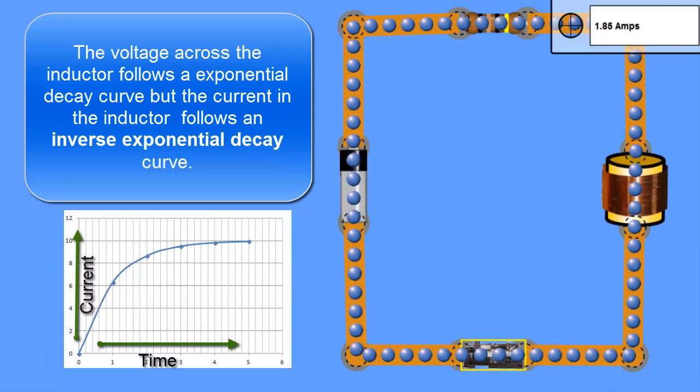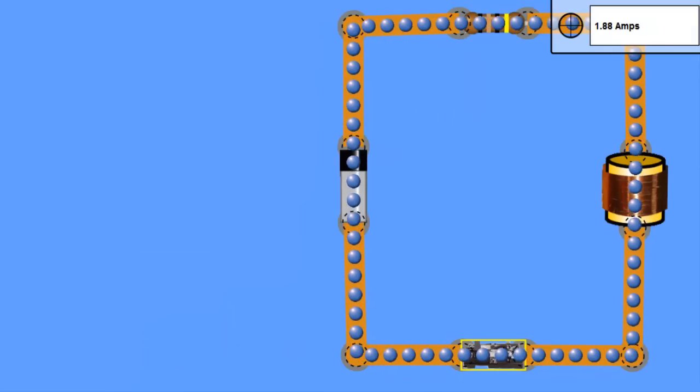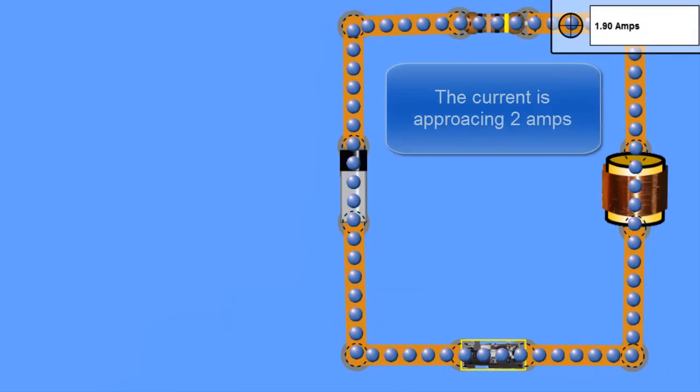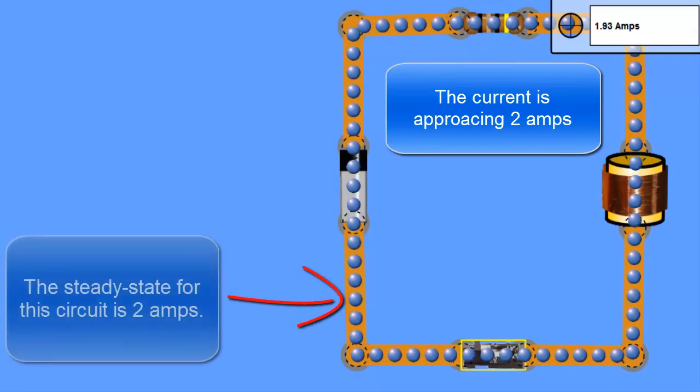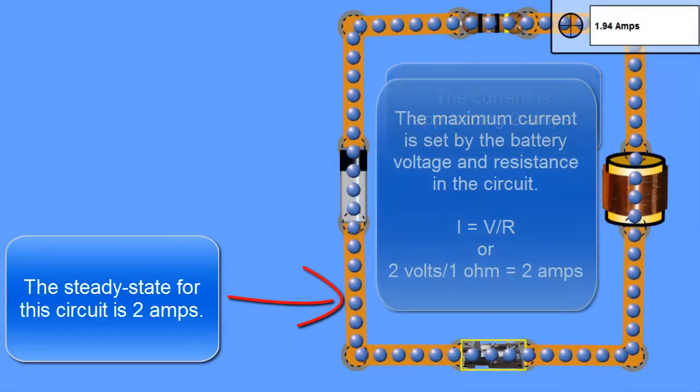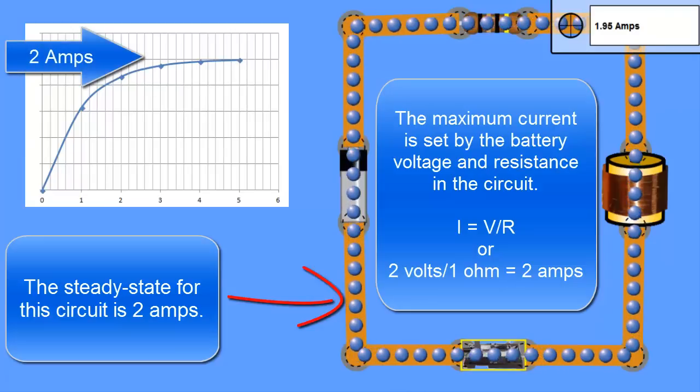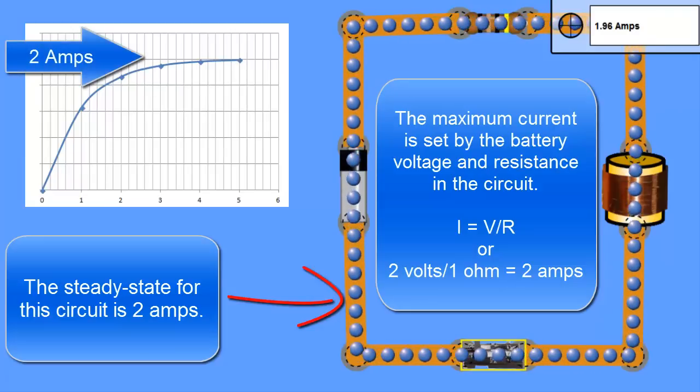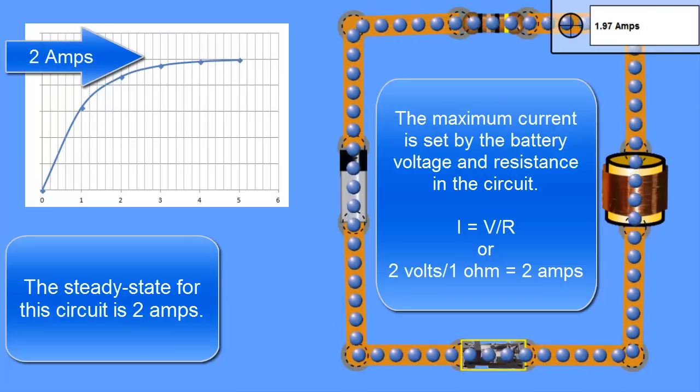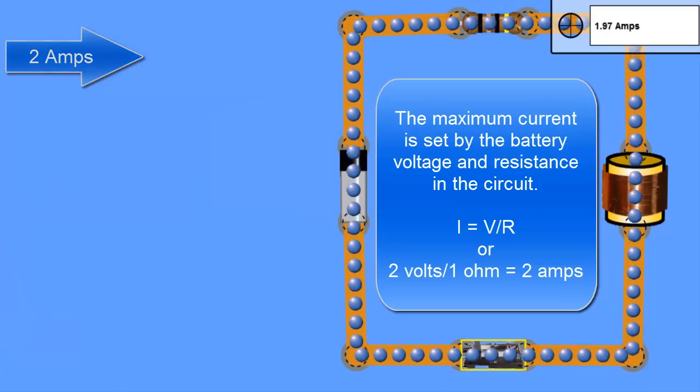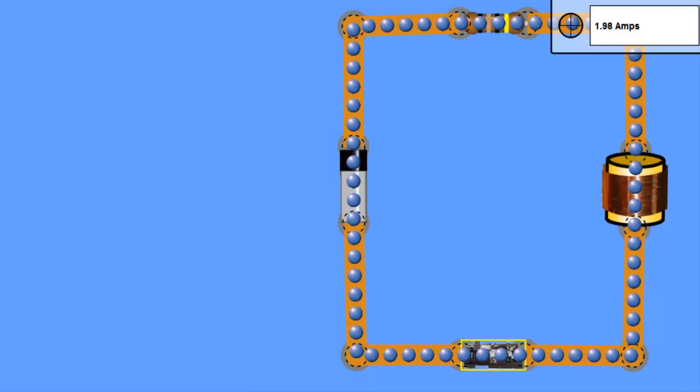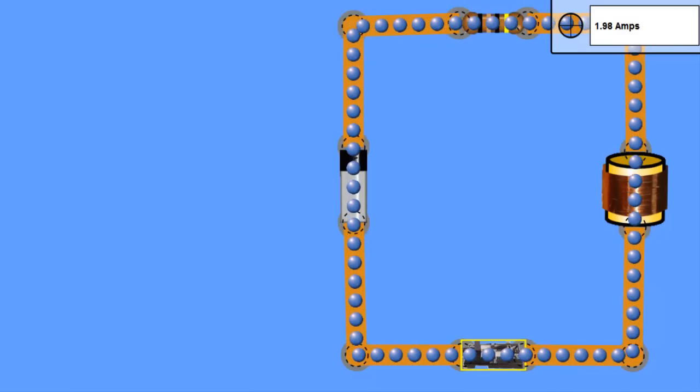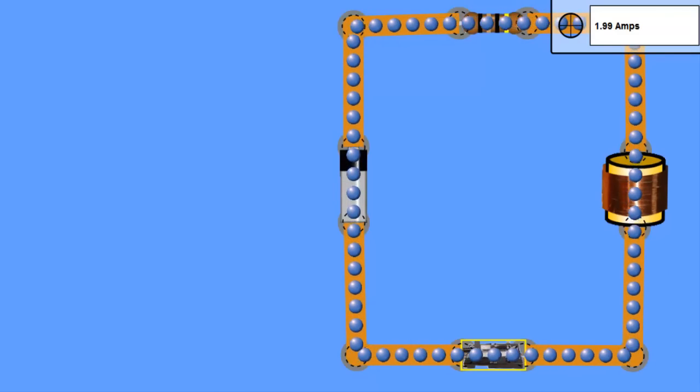The current didn't come up to the value that we expected, but it's converging or approaching 2 amps. Because as you look you see that the current is changing less and less rapidly as we get closer to 2 amps. So the resistor is limiting the current to 2 amps, but apparently the inductor is keeping the circuit from instantaneously getting to 2 amps.